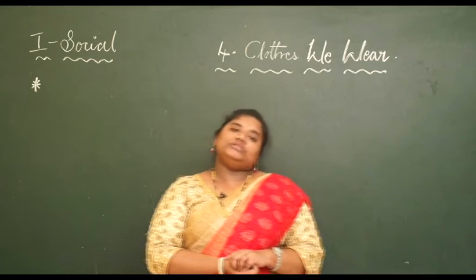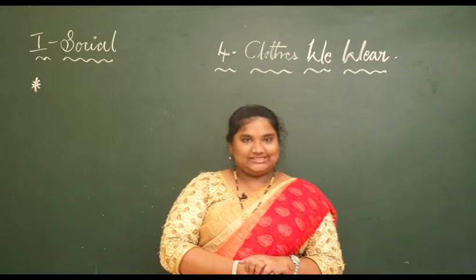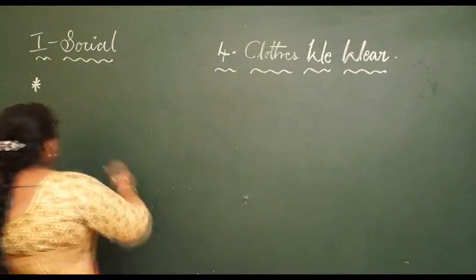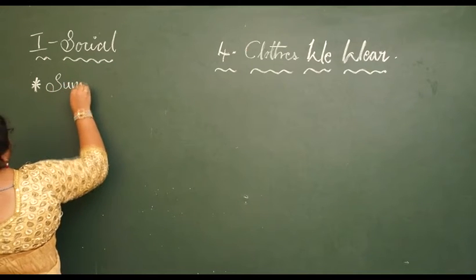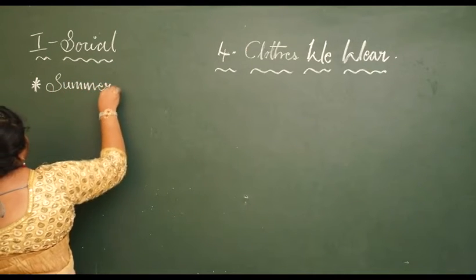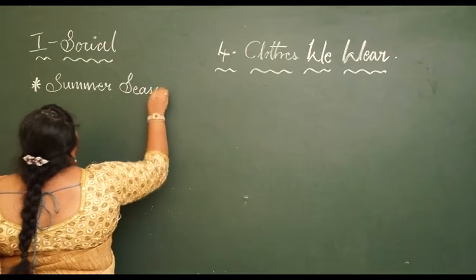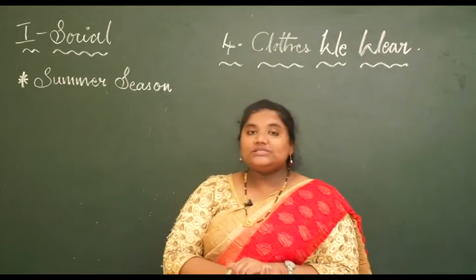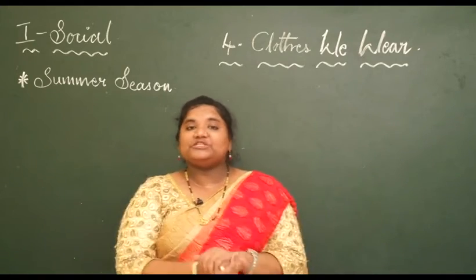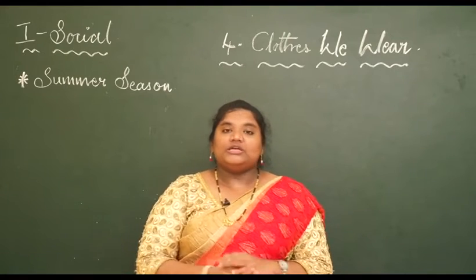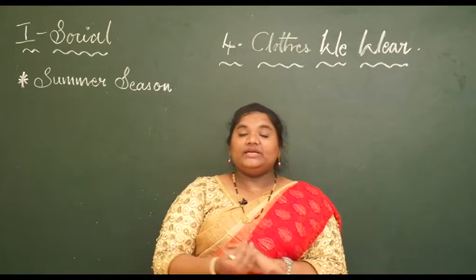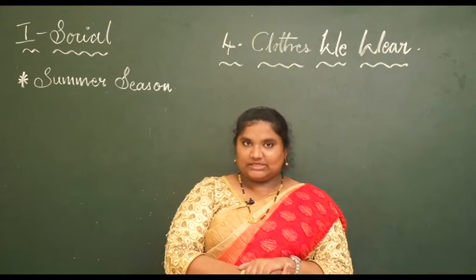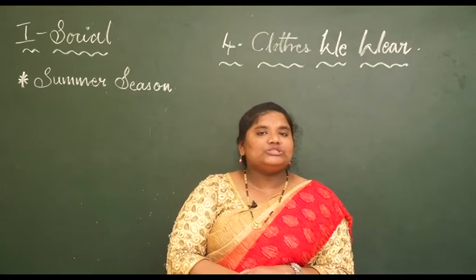We wear different types of clothes in different seasons like summer, winter, and rainy. The first is summer season. Why is it called summer? Because in summer season it is very hot — the light emitting from the sun is very sharp, it gives us a lot of heat, and we suffer from sweat. We release a lot of sweat in summer season.